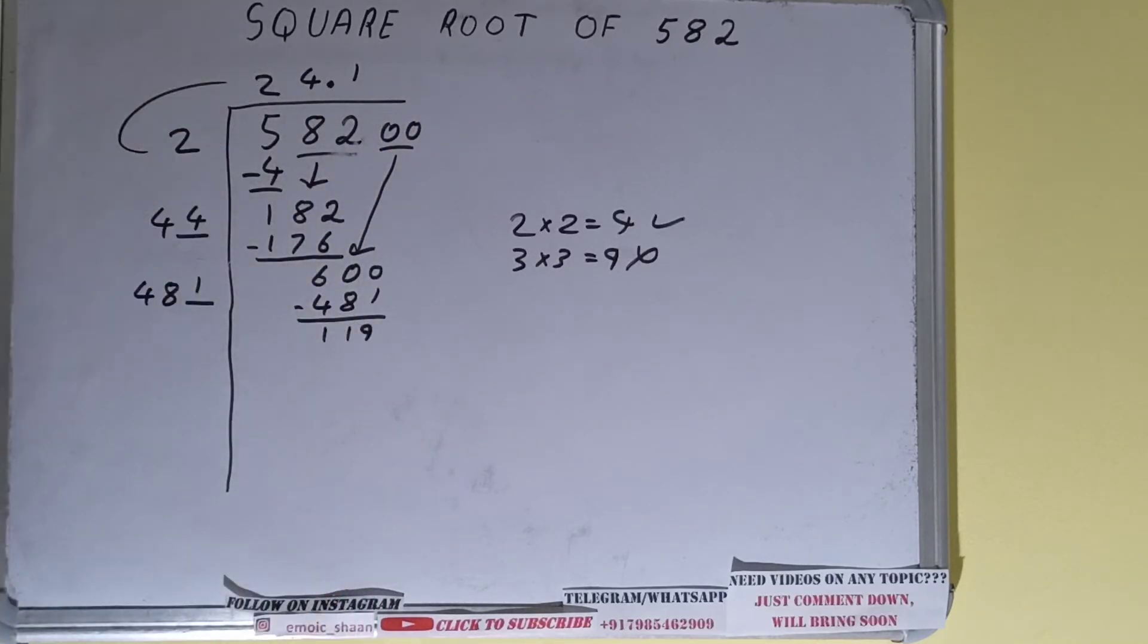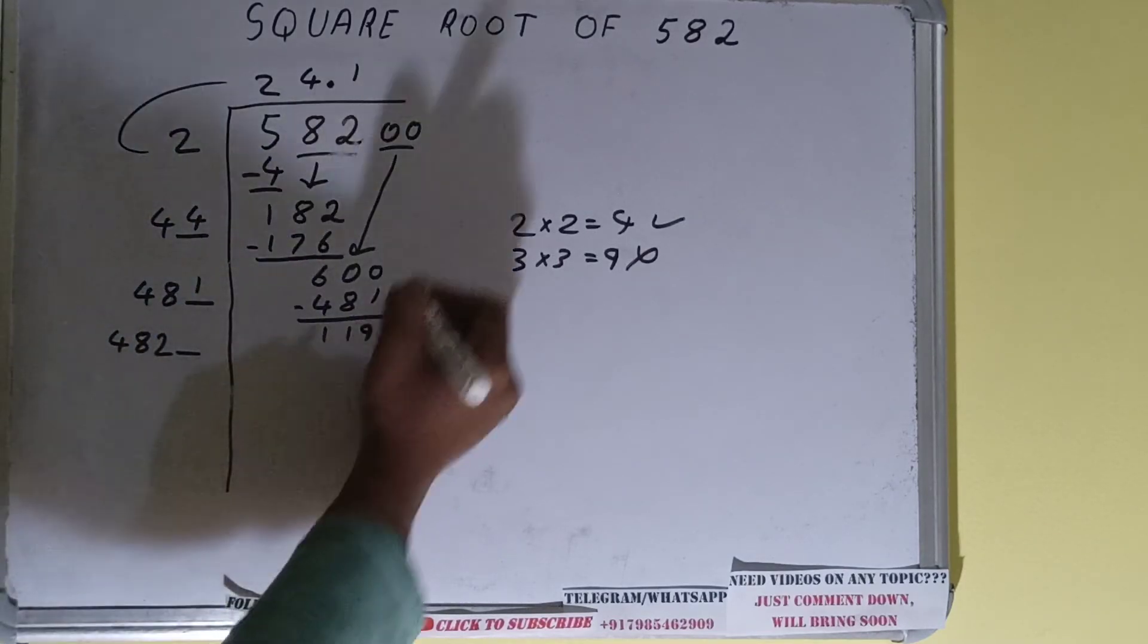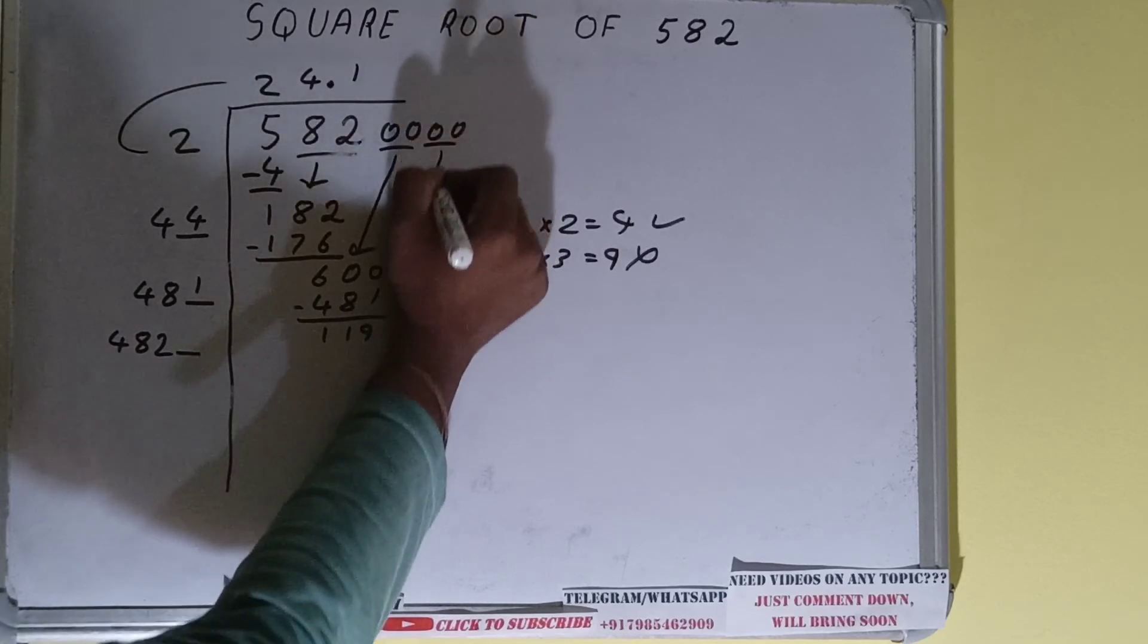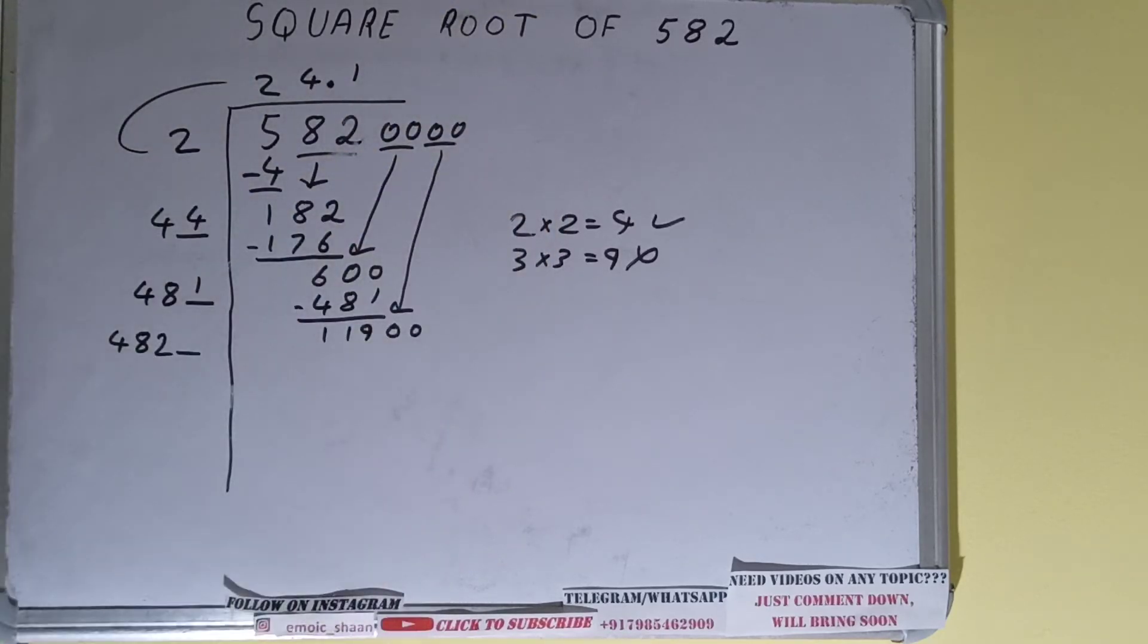Now 481 times 1 we did. Add both: 481 plus 1 will be 482 and 1 digit extra to make this number big. Bring the next pair of zeros down and it becomes 11900. We can try 2.